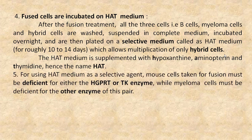For using HAT medium as a selective agent, mouse cells taken for fusion must be deficient for either HGPRT or TK enzyme, while myeloma cells must be deficient for the other enzyme of this pair.